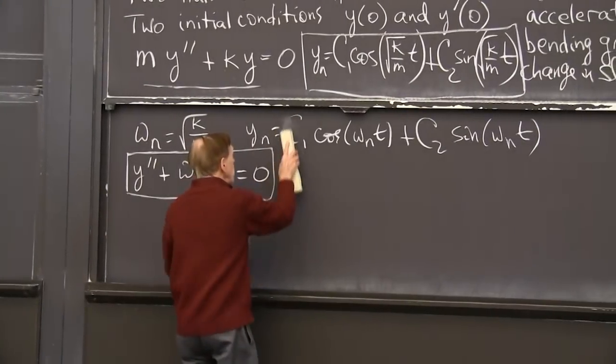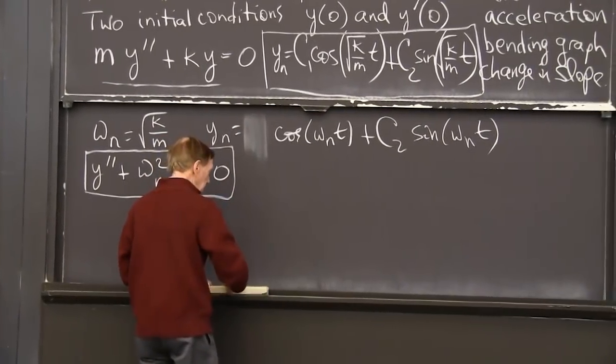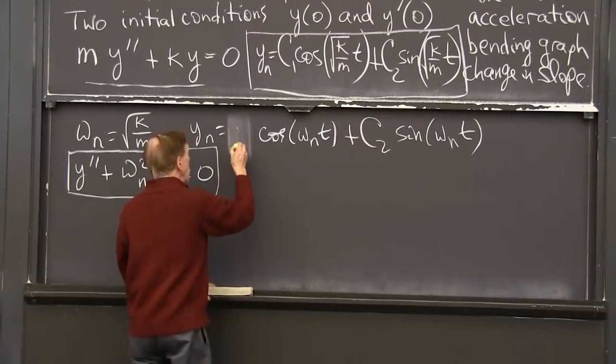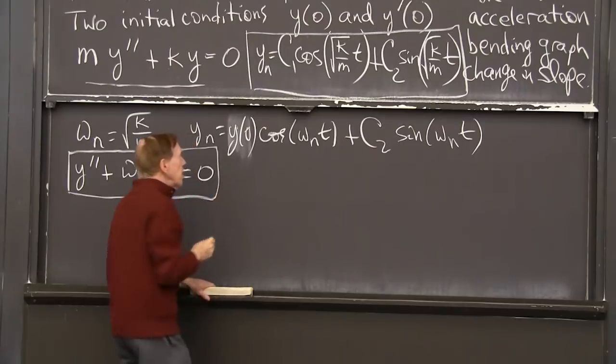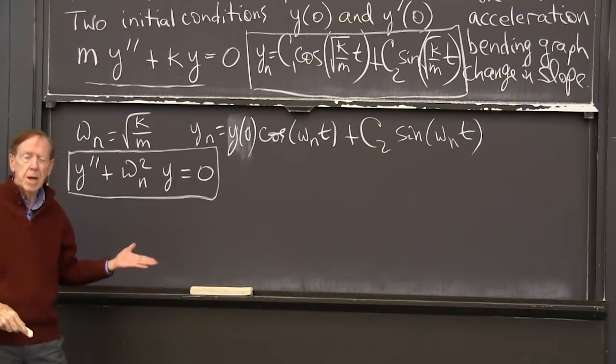This is 1. So I discovered that c1 should be y of 0. Simple. c1 is y of 0, because that gives me the right answer at t equals 0.